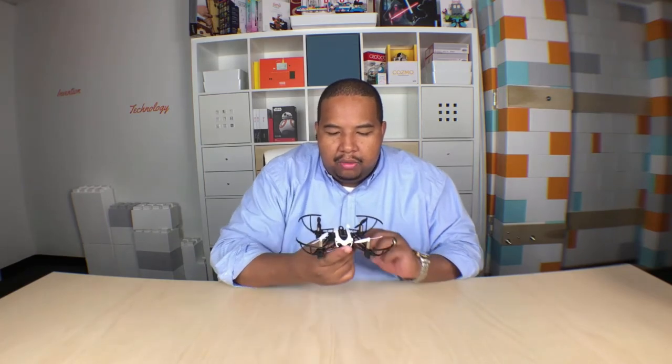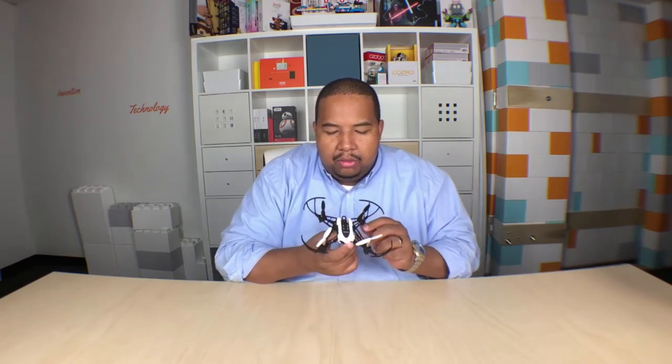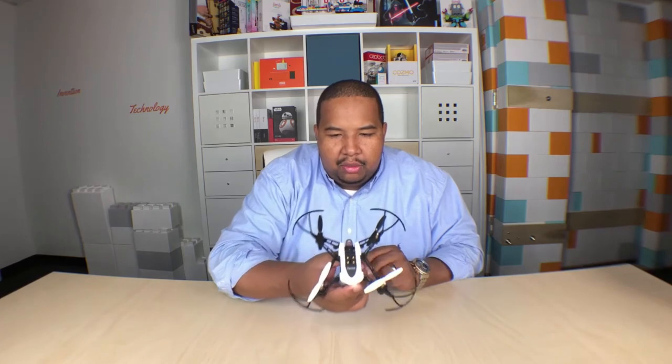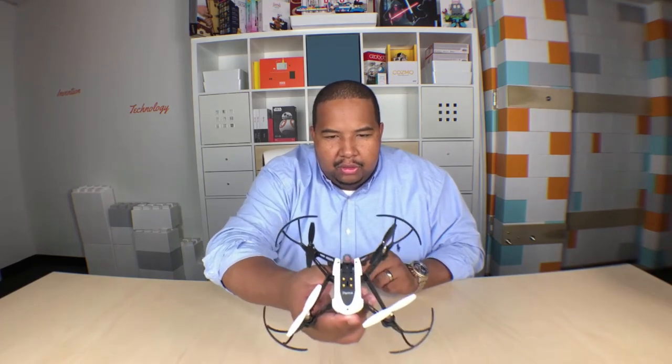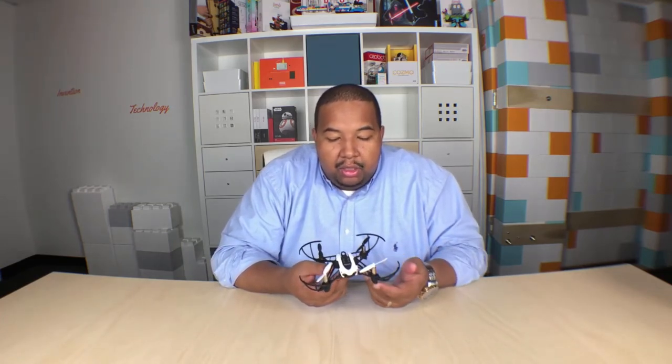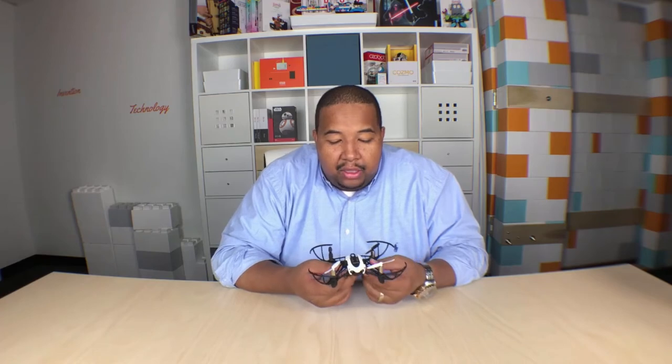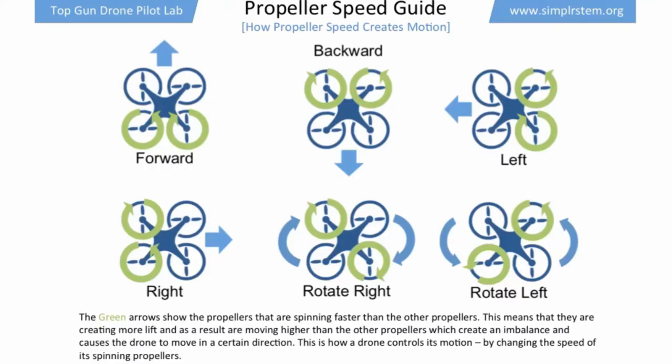When you see the drone flying, you'll see it moving tilted to the front, to the back, left, or right. Really, all that's happening is it's being pushed off balance, which gives you the flight characteristics that you see.